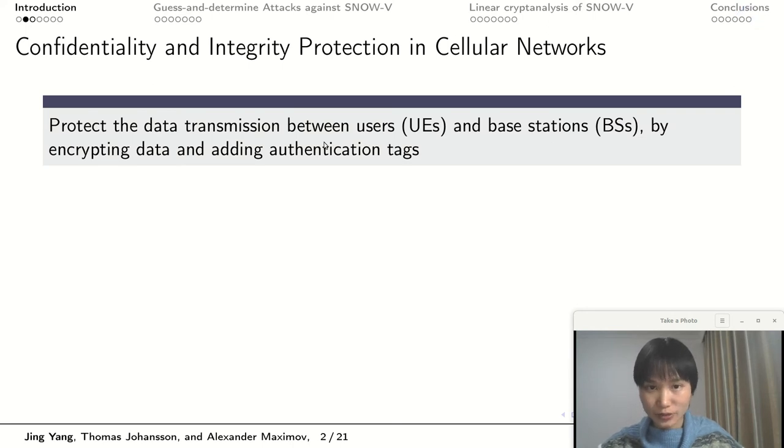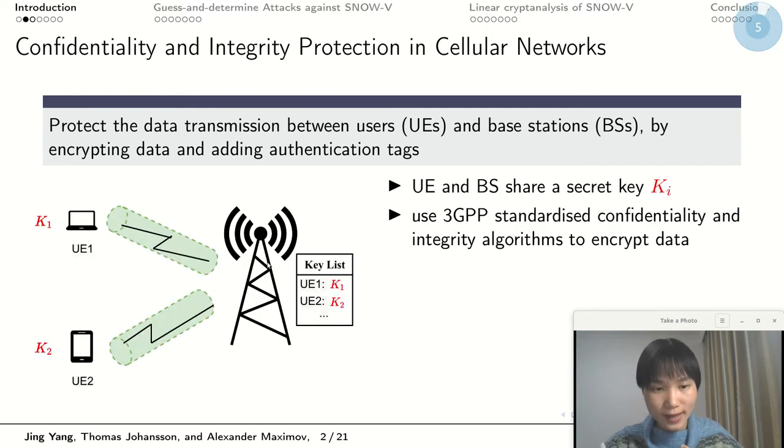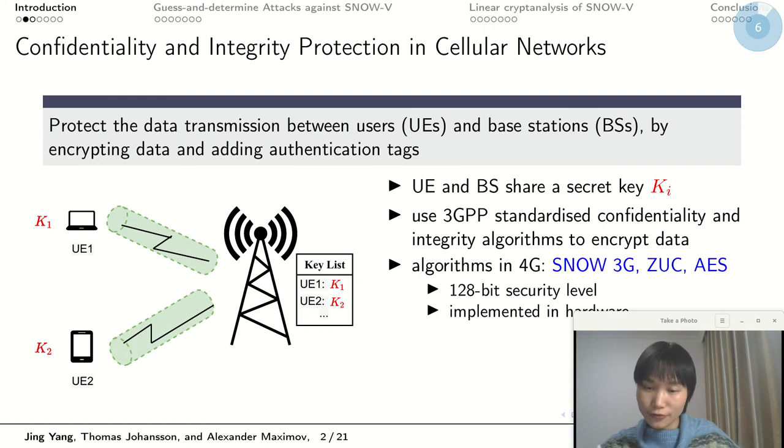The confidentiality and integrity protection in cellular networks protects data transmission between users and base stations by encrypting the data and adding authentication tags. This is like adding some security tunnel over the wireless channel as shown in the figure. Each user and base station shares a secret key, and if they have data to be transmitted, they use this secret key as input to a 3GPP standardized algorithm to encrypt and authenticate the data. In 4G there are three such ciphers: SNOW 3G, ZUC, and AES.